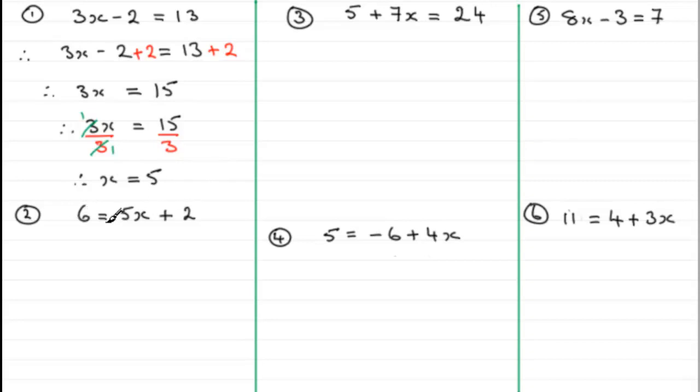In the next one, number 2, I chose this one just to put the x term on the right hand side of the equals. I copy down my equation: 6 equals 5x plus 2. What I need to do is get rid of the plus 2 here, and the only way I get rid of that plus 2 is to subtract 2 from both sides. So 6 take away 2 is 4 and it equals the 5x.